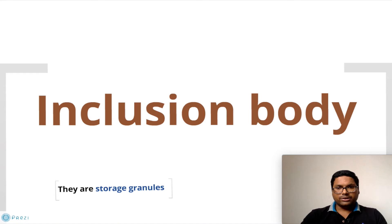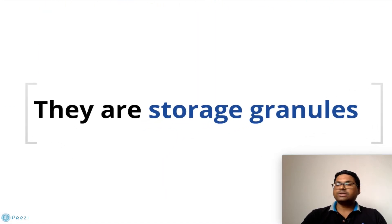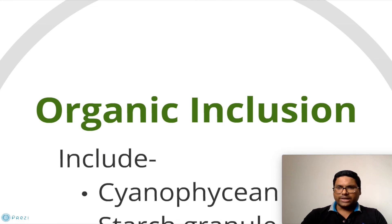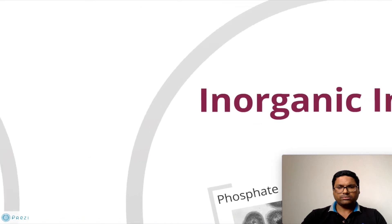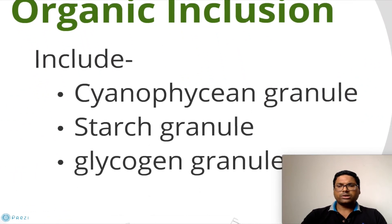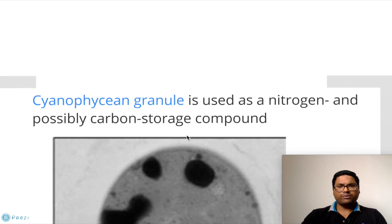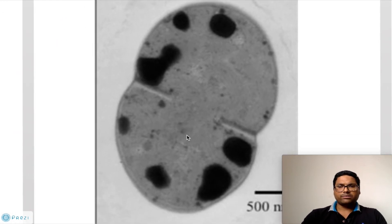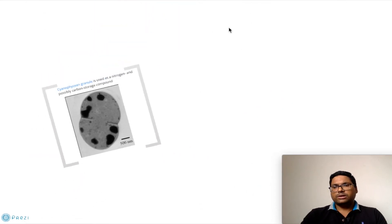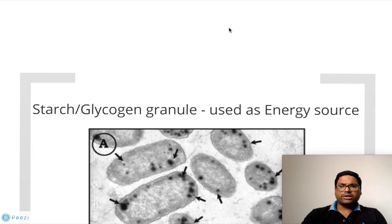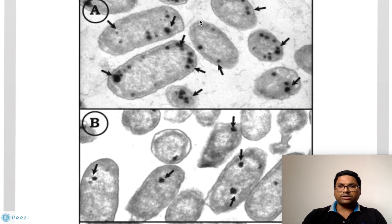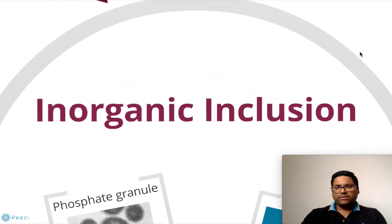Inclusion bodies are storage granules inside the bacteria present in the cytoplasm. There are two types: organic inclusions and inorganic inclusions. Organic inclusions include cyanophycine granules, starch granules, and glycogen granules. Cyanophycine granules are used for the storage of nitrogen as well as some carbon compounds, appearing as dark bodies in the cell. Starch and glycogen granules are used as an energy source.